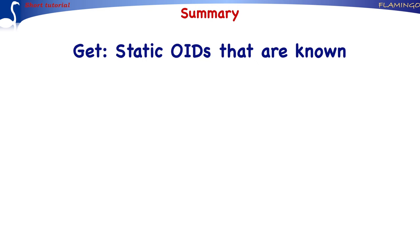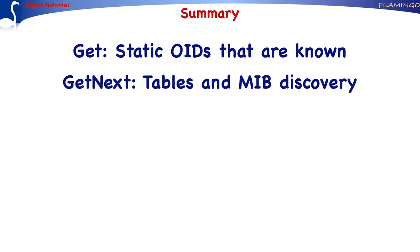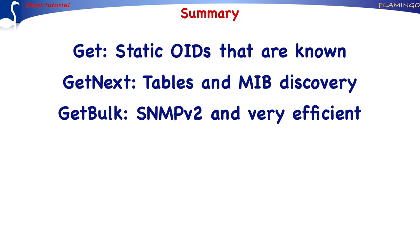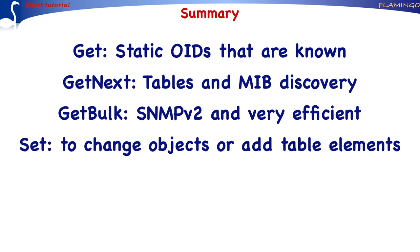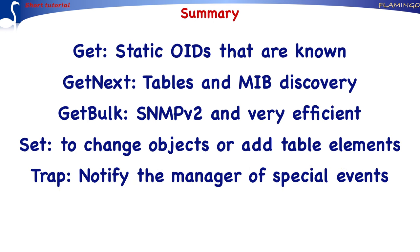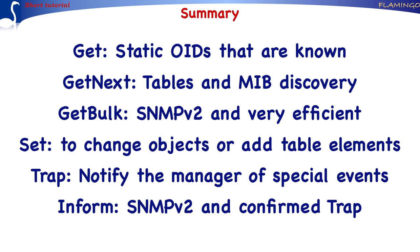In this tutorial we have discussed the PDUs defined and used by SNMP version 1, version 2, and version 3. We discussed the GET PDU, used to retrieve values for static OIDs that the manager knows; the GET NEXT PDU, used to retrieve tables and discover which MIB modules are supported by a certain agent; the GET BULK PDU, added with SNMP v2 to retrieve entire tables within a single interaction; the SET PDU, used to change object values or add new elements to a table; the TRAP PDU, sent by the agent to signal occurrence of special events; and the INFORM PDU, added by SNMP v2 to allow traps to be confirmed. I hope you enjoyed this video — please take a look at our other SNMP tutorials as well.